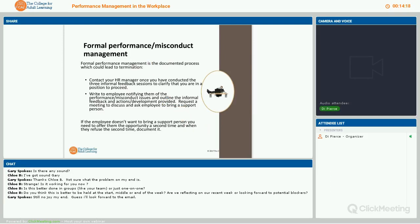If you have given your employee several informal feedback sessions — say two to three — about the same issue, and you've provided some training and coaching, and the issue continues, then the next time it happens you need to go down the formal performance management stage. No more than three informal sessions. If you have an HR manager, contact that person straight away and have a conversation, because they need to double-check that you have enough evidence and support to go forward down the formal process.